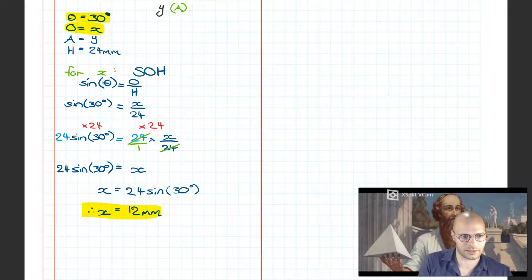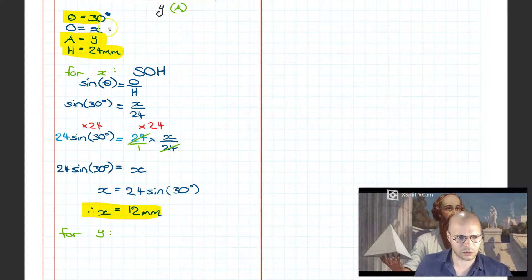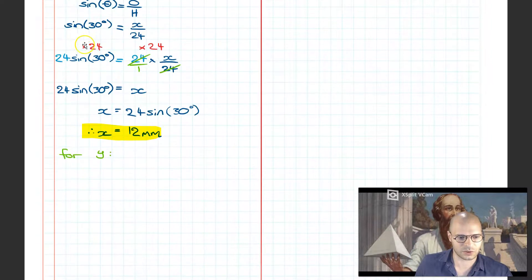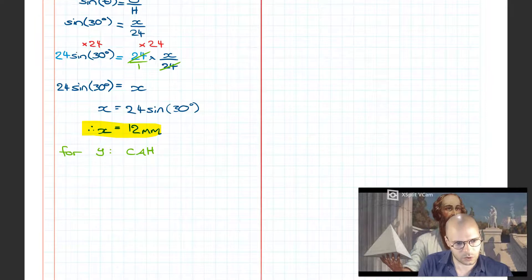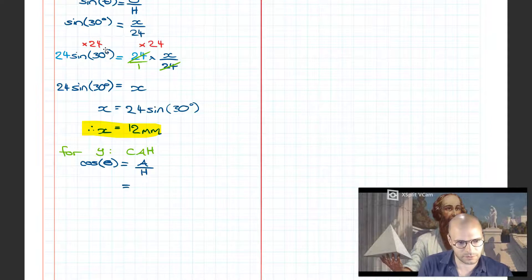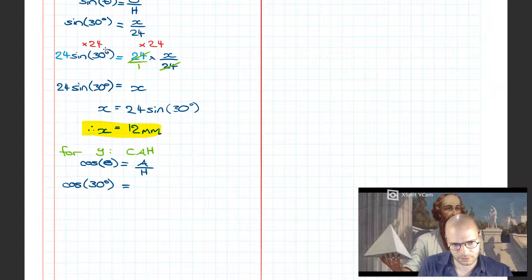Now the next job we have on our agenda is to solve for the value of Y. So we have theta, we sort of have X but we're going to ignore it for now because we've already got this pre-calculated 24 for the hypotenuse, and we want to solve for Y. Looking at the values we have, we have theta, the adjacent, and the hypotenuse. So that gives us CAH, standing for cosine theta is equal to the adjacent over the hypotenuse.